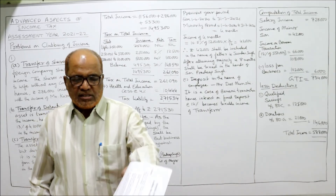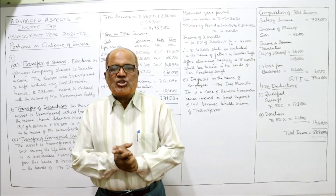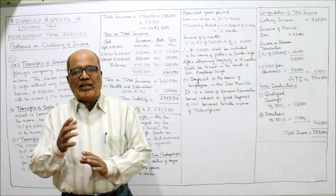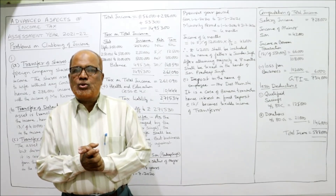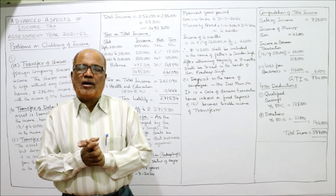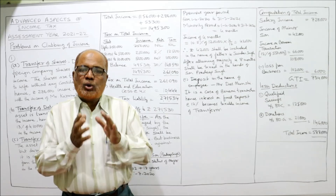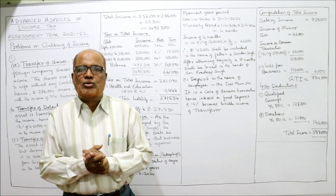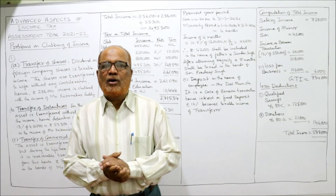These are the two problems on clubbing or integration of income. The next video will cover the next topic: set off and carry forward of losses. I have also started a new channel by the name 'Hans Accounting Institute' for IGCSC students — do visit and subscribe to the new channel. We will continue with the next topic in the next video.